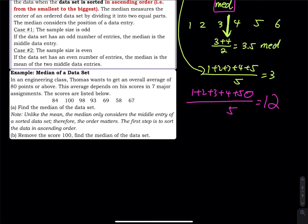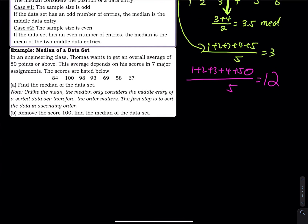So let's sort the data first. So we sort the data from the smallest to the largest value: 58, and then 67, 69, 84, 93, 98, and then 100, right? We didn't miss anybody. So we have seven data. So seven is odd.